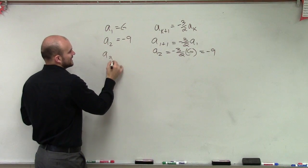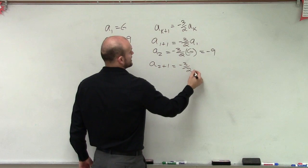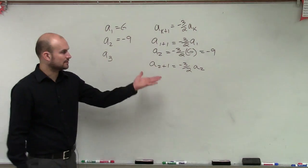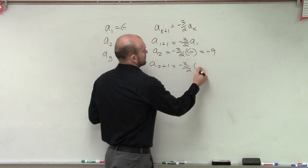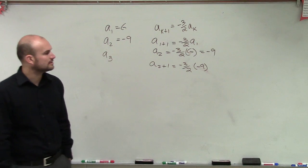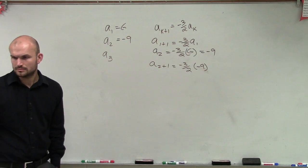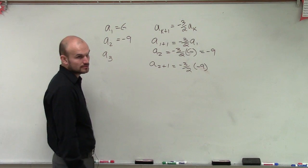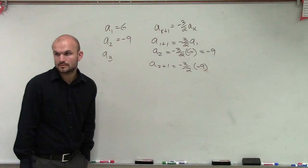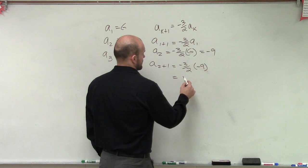Then I want to figure out what a sub 3 is. So I'll do a sub 2 plus 1 equals negative 3 halves times a sub 2. Now we know a sub 2 is now equal to negative 9. And then we do negative 3 times negative 9 is going to be... and then divide by 2 would be 13 and a half.